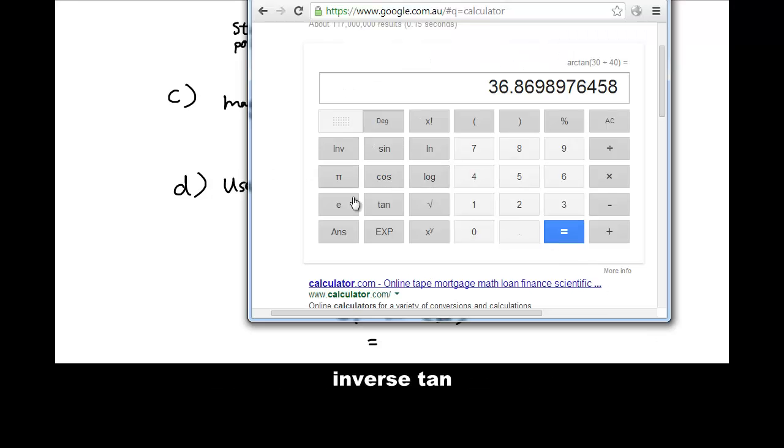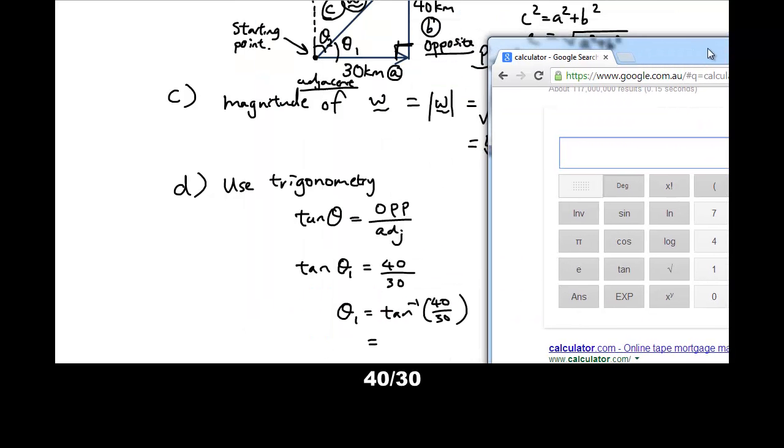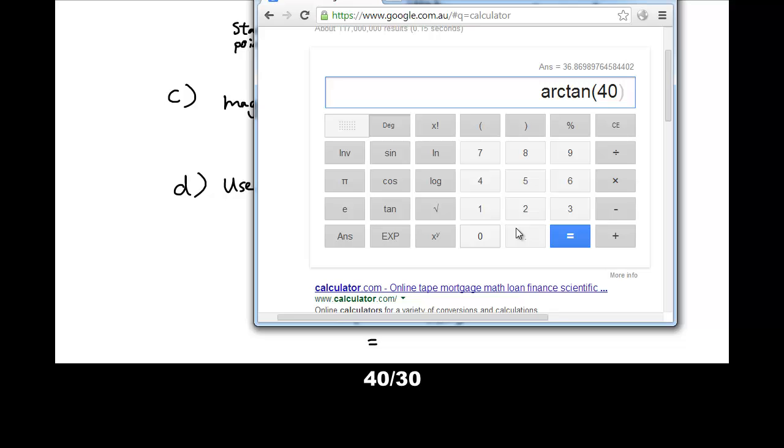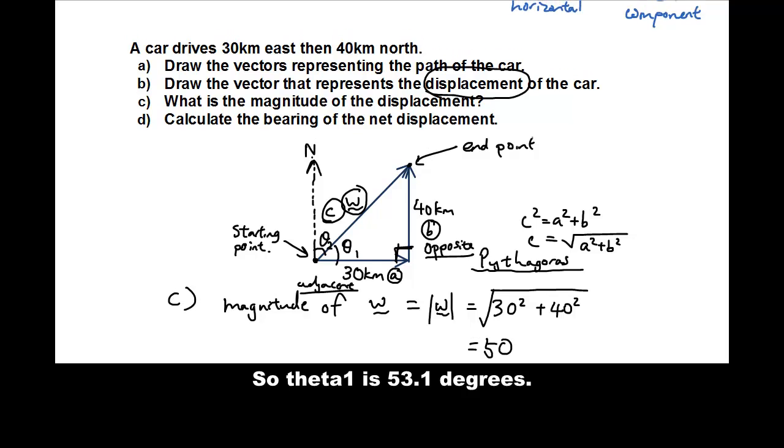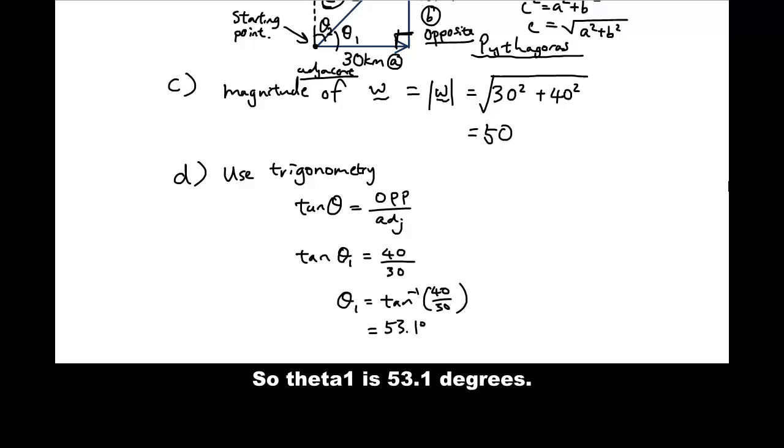inverse tan, 40 over 30. And the answer is 53 degrees, 53.1 degrees. Okay, so now we have successfully completed the problem. Hopefully, oh, hang on. So theta is 53.1 degrees.